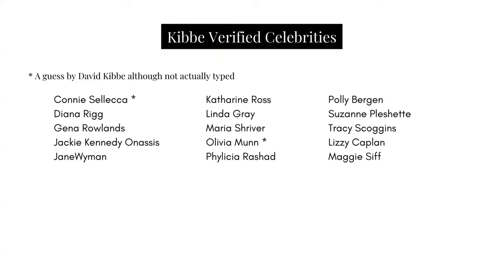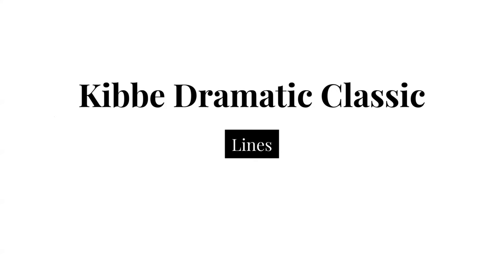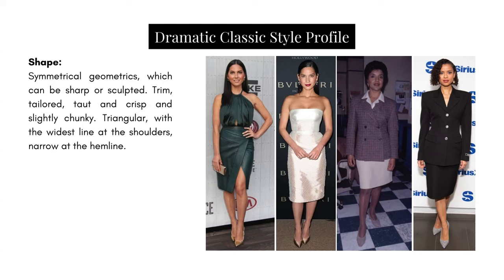Here is a list of Kibbe-verified celebrities. Now let's discuss Kibbe Dramatic Classic lines. Shape should be symmetrical geometrics, which can be sharp or sculpted — trim, tailored, taut, and crisp, and slightly chunky. The silhouette should be triangular with the widest line at the shoulders and narrow at the hemline.